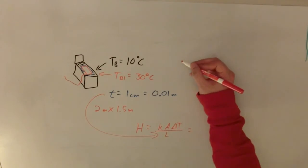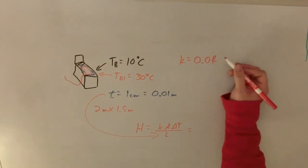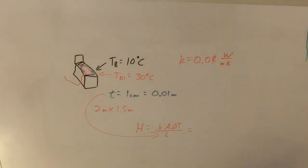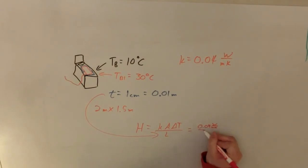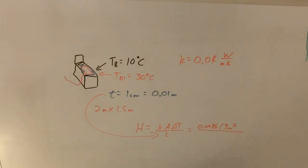I need K, the coefficient of thermal conductivity. For the sheet — I went with cotton — checking my engineering table gives me 0.04 watts per meter kelvin. This equation gives us an answer in watts, which is energy per time, effectively joules per second. Plugging in: 0.04 watts per meter kelvin, times our area of 3 square meters — 2 meters times 1.5 meters equals 3 square meters.